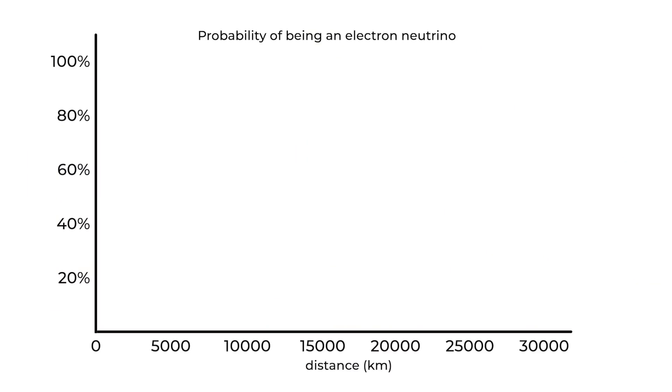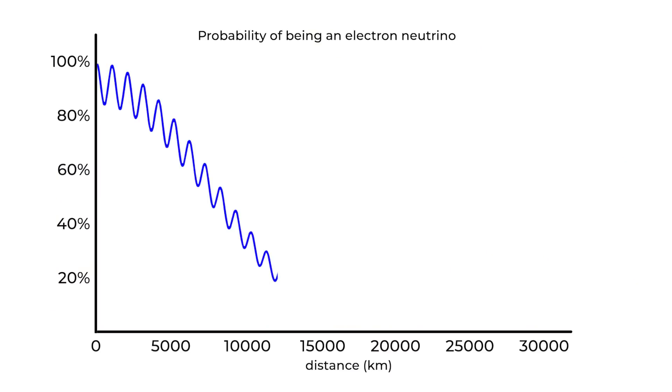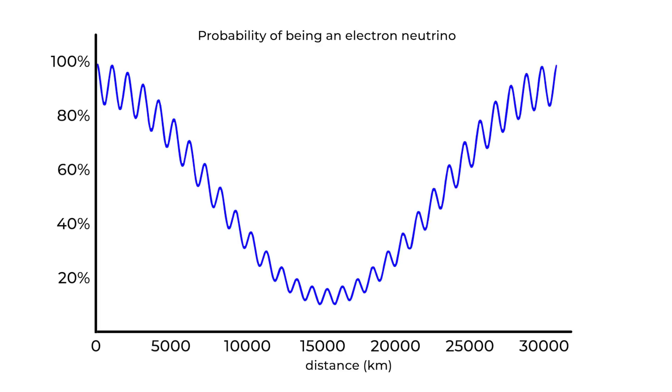For example, a beam of electron neutrinos would morph into a mixture of electron and muon neutrinos and then back again into electron neutrinos. The pattern then starts over again and again. And, of course, tau neutrinos also get into the game. If you start with a beam of pure electron neutrinos and then try to predict what fraction of the beam will be electron neutrinos at different distances, the result is a very complicated pattern.